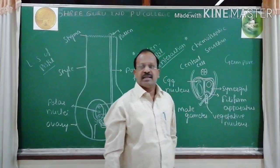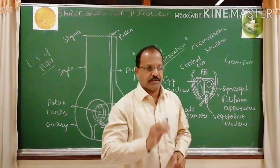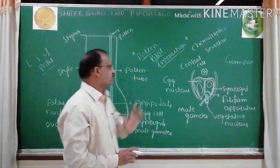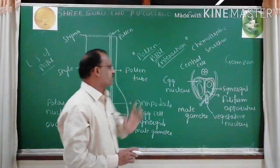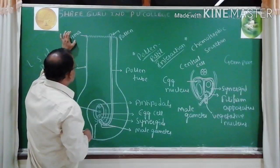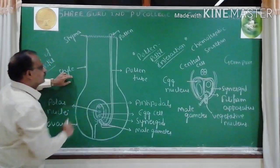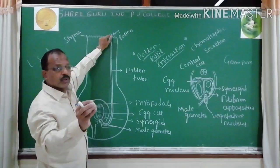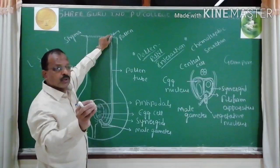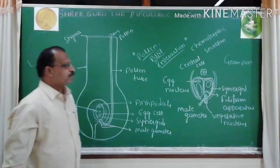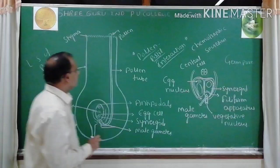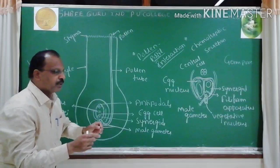As previously covered, sporopollenin is absent at germ pores. One, two, or three germ pores are present in dicots, whereas in monocots only one germ pore is present. The pollen tube makes its way through the stigma and style, and growth is continuous until it reaches the female gametophyte or embryo sac.